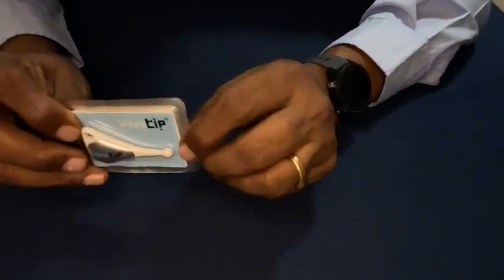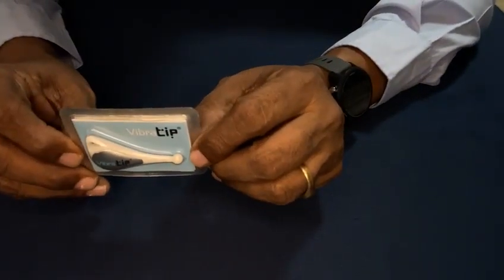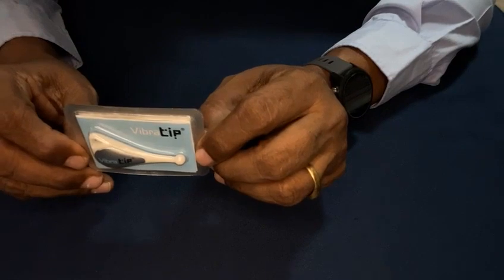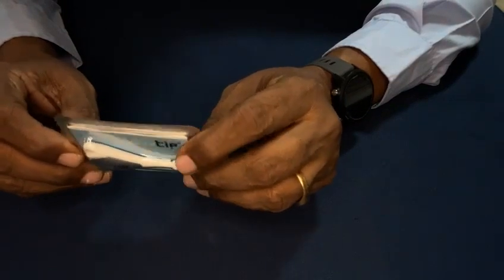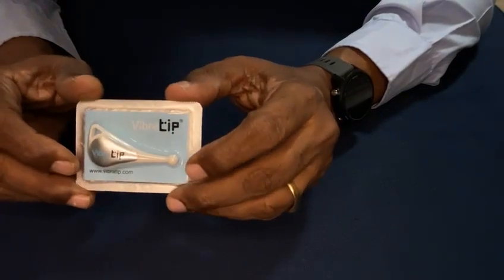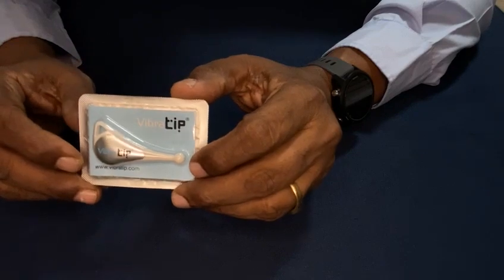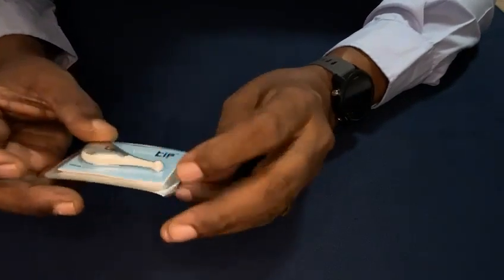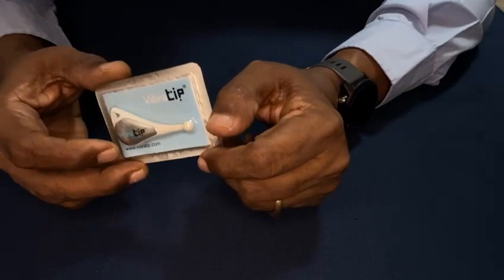This is our VibroTip electronic tuning fork. It vibrates at 125 hertz and the vibration strength is equivalent to 25 volts.